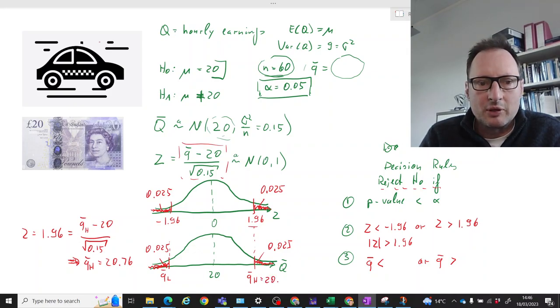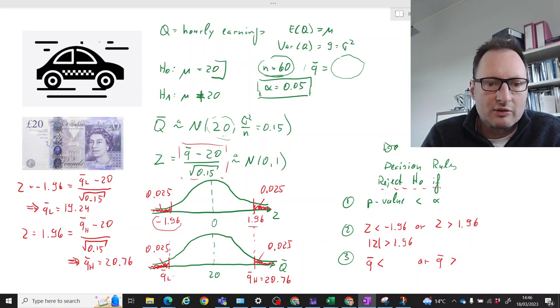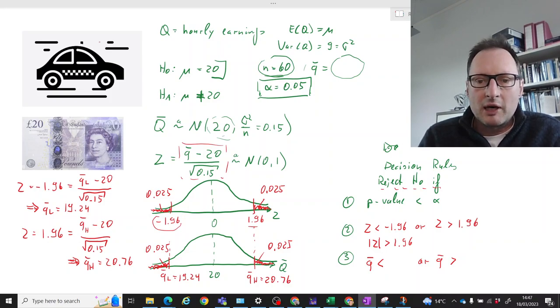And then Q-bar low we can get from using this value here. So if Z equals negative 1.96, then we can figure out what Q-bar low should be. Q-bar low minus 20 divided by square root of 0.15 should equal negative 1.96. And if you solve that for Q-bar low, you get 19.24. So this means we can write down our third decision rule: reject H-naught if Q-bar is either smaller than 19.24 or larger than 20.76.